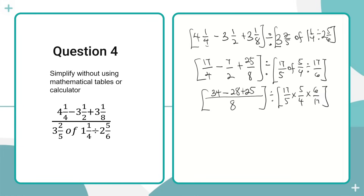We now look for common terms to cancel. The 17 and 17 cancel. Five divides five. For four and six, two divides both — giving two on one side and three on the other. So we get three over two. In the numerator: 34 minus 28 gives six, and six plus 25 gives 31. So we have 31 over eight.